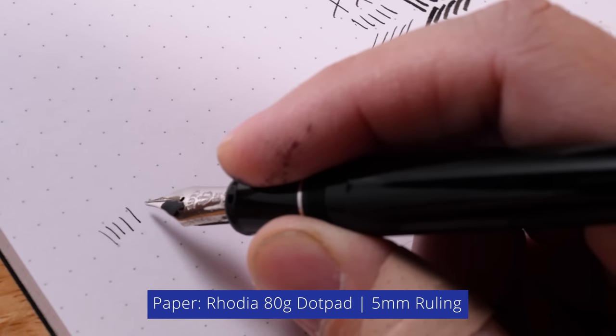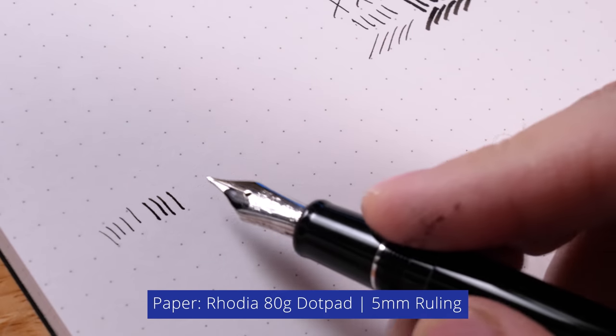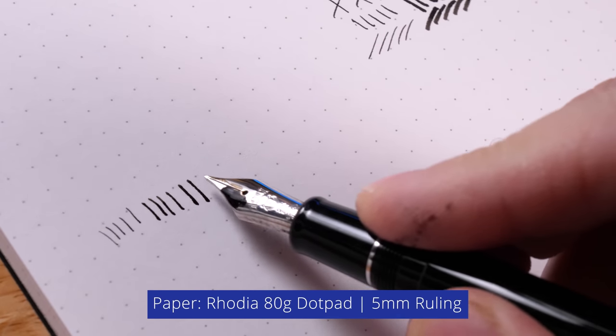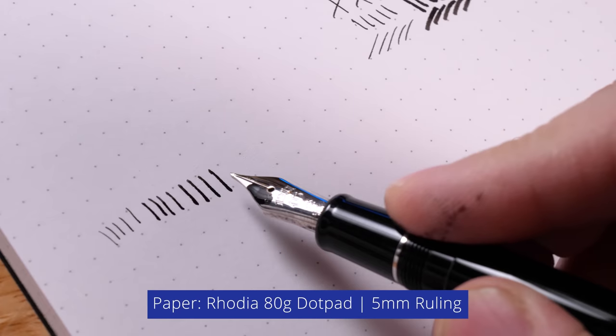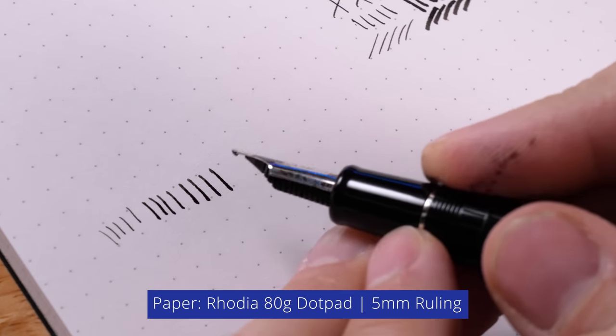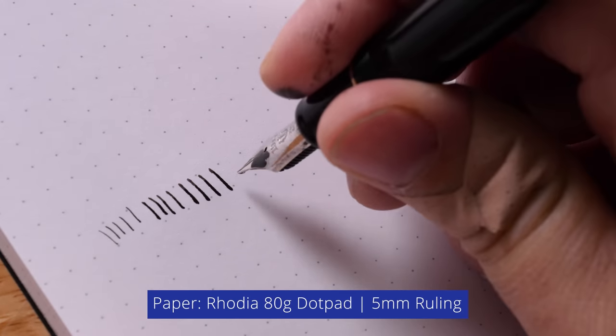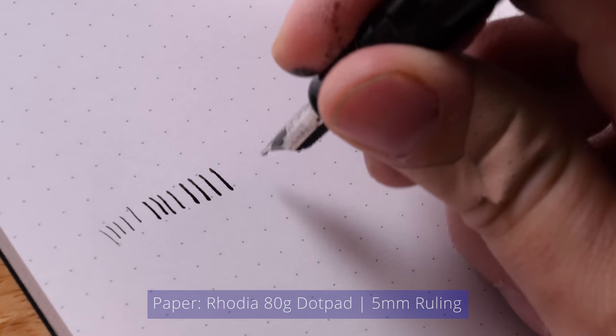However, if I come down to like the mid height, it gets a little thicker. And if I come down low, it gets thicker like that. So that's similar to a zoom nib, right? Zoom nib has kind of that same thing going on.